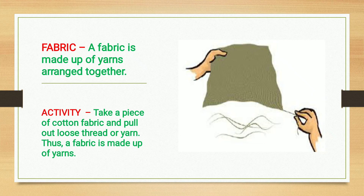Fabric. A fabric is made up of yarns arranged together. Let us take another activity: take a piece of cotton fabric and pull out a loose thread or yarn. Thus, a fabric is made up of yarns.